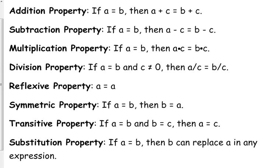The reflexive property seems very unuseful — the fact that A is equal to A — but it will come into play a little bit. Symmetric: you can reverse the order. It doesn't matter whether you say A is equal to B or B is equal to A. The transitive property says if A is equal to B and B is also equal to C, then you can say A is equal to C.